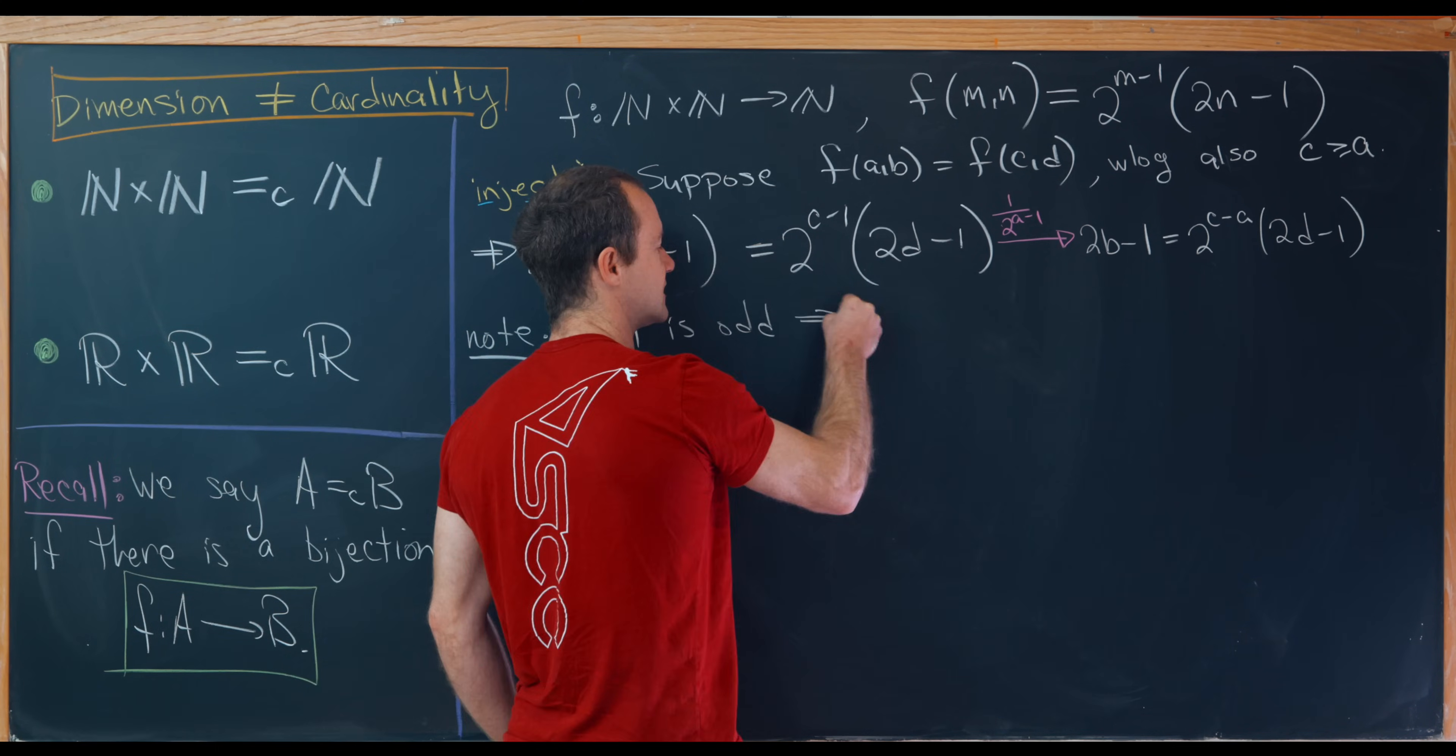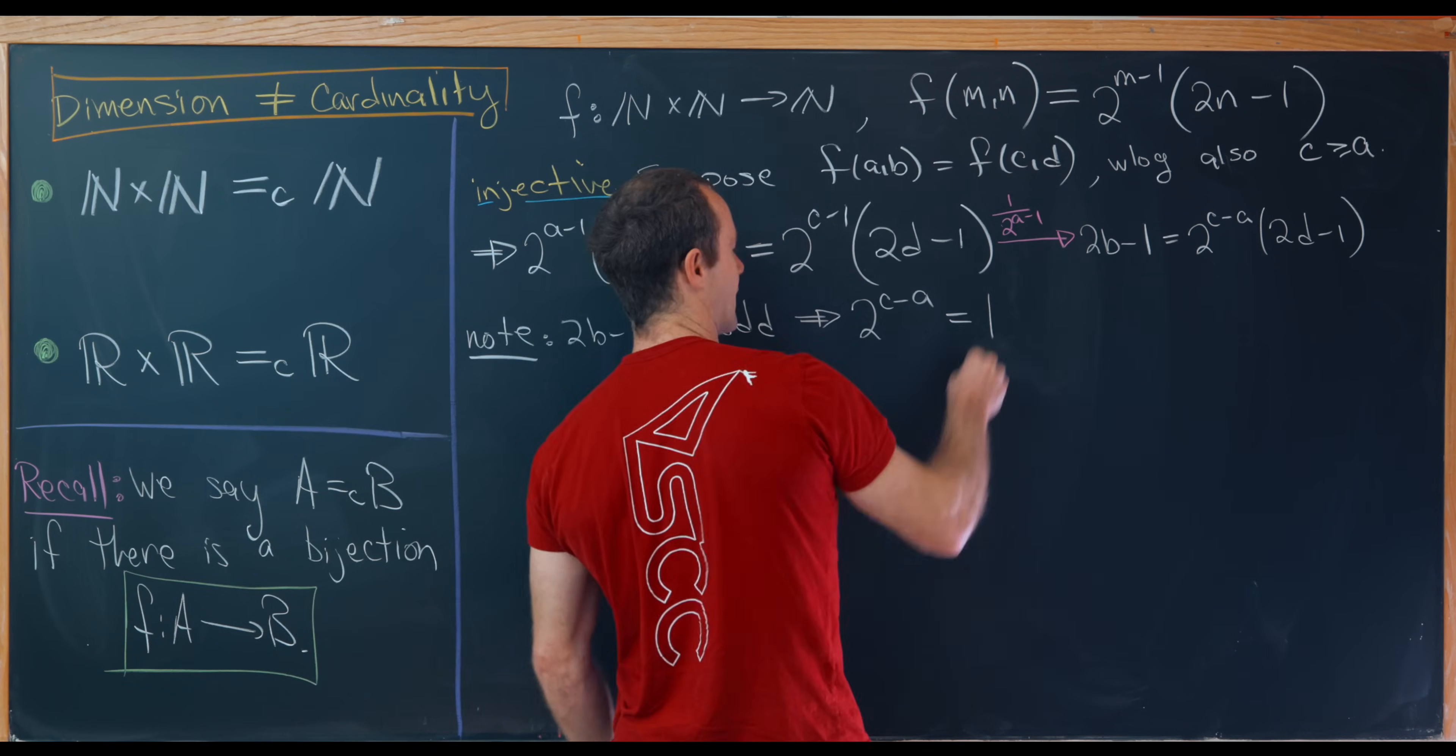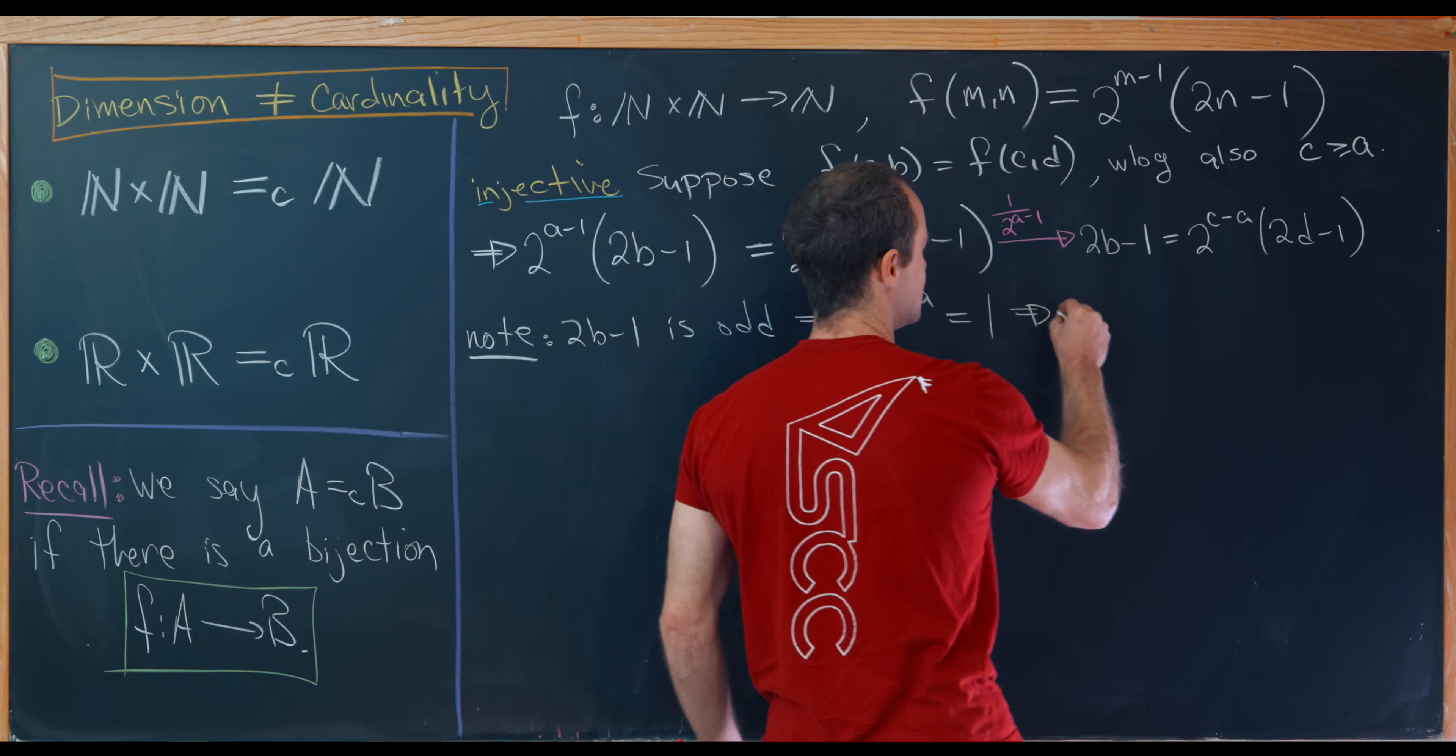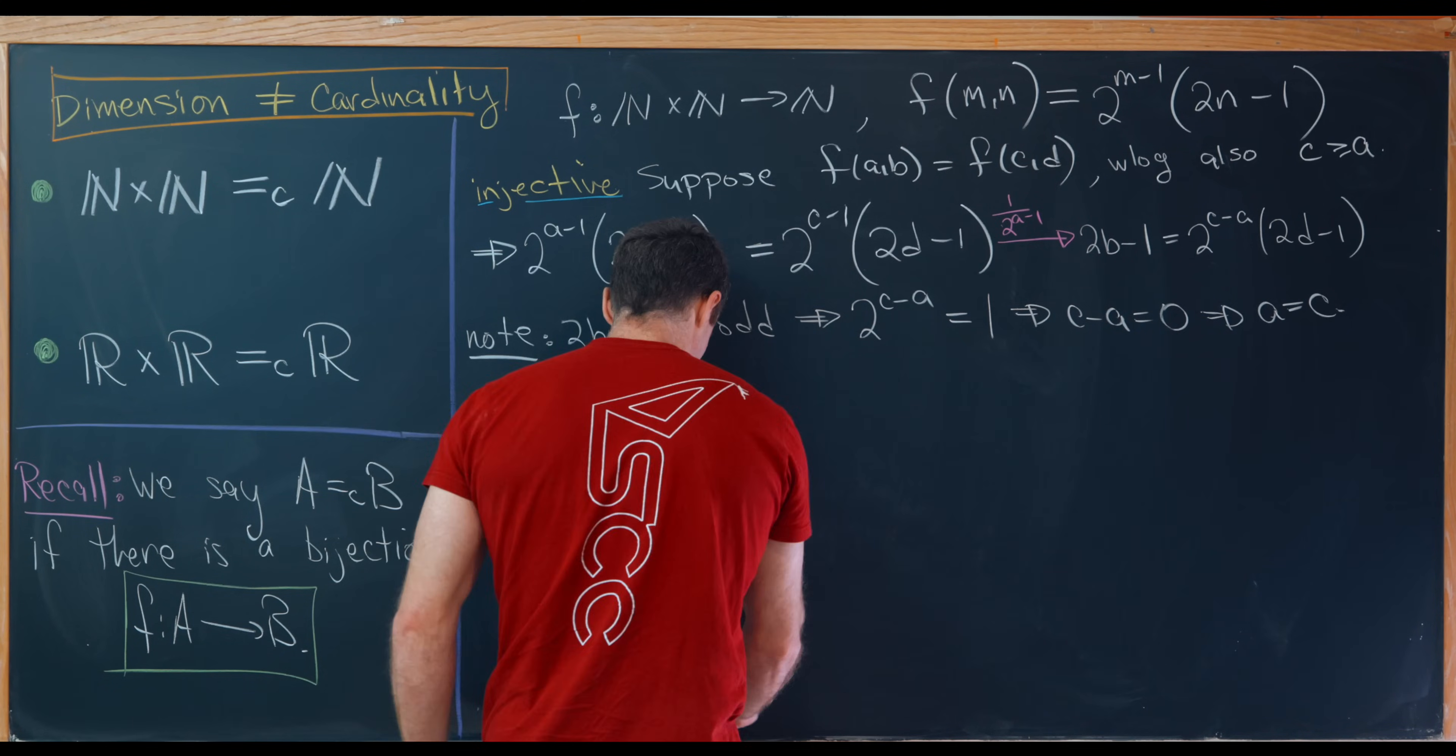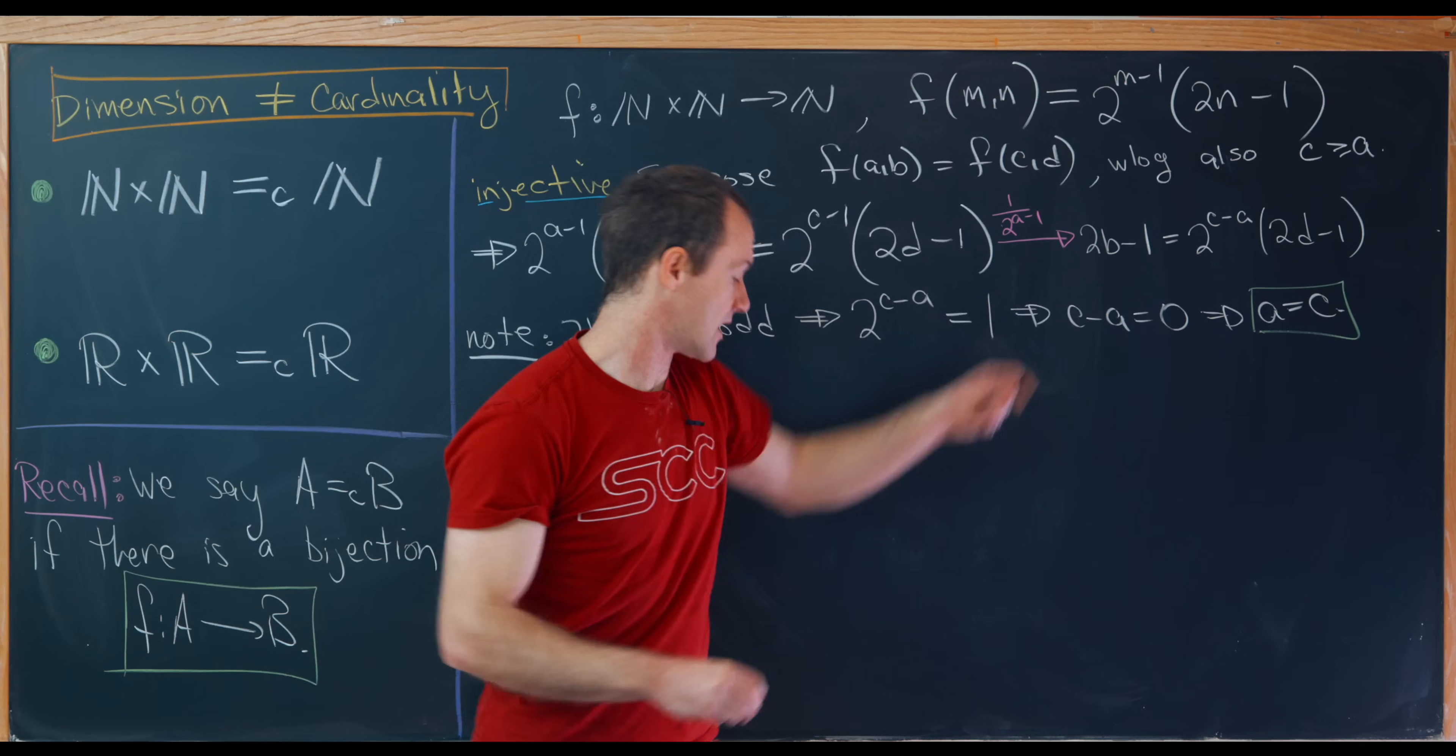We'll notice 2d minus 1 is already odd. So what that really tells us is that 2 to the c minus a is odd. But the only power of 2 that's odd is the zeroth power of 2, which is equal to 1. So that means 2 to the c minus a is equal to 1, but in turn that means that c minus a is equal to 0, which means that a is equal to c. Okay, so that's good. We've got our first thing: we have that a is equal to c.